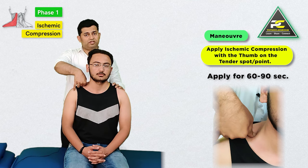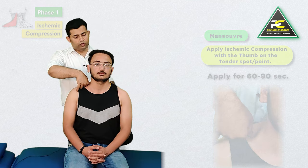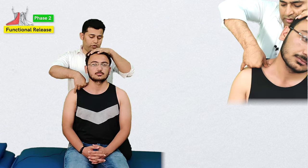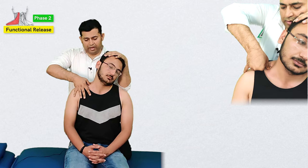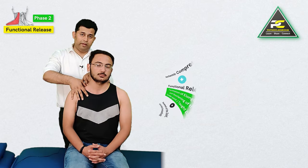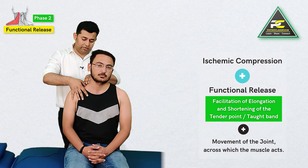Immediately following this ischemic compression, the therapist is going to utilize joint movement — the cervical spine is going to be moved in the direction of lateral flexion and back to the starting position, in order to mobilize the taut band and help in the elongation and relaxation of this particular structure.